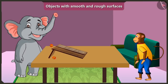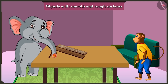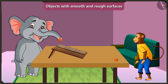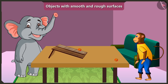Yes, now I understood. The ball rolls faster on this wooden slope because this slope has a smooth surface — it is very smooth. And the ball rolls slowly on this slope because this slope has a rough surface — its surface is very rough. Well done, Appu!